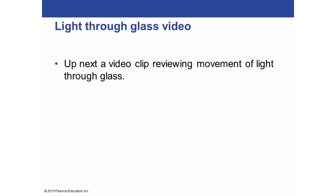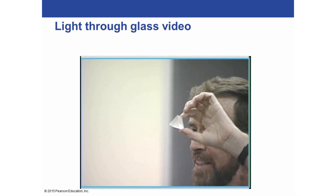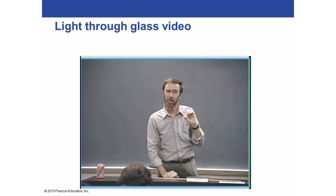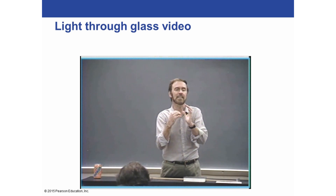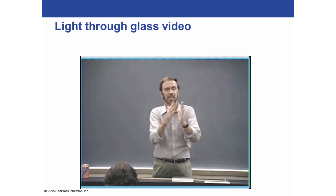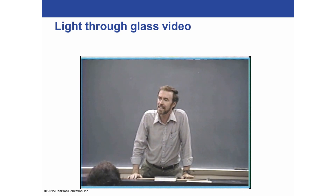Next we have a video clip by your textbook author that reviews the movement of light through glass. Did you know the speed of light is less in glass and water than it is in air? How does light slow down when it gets to the glass, and — this used to bother me — if it slows down in the glass, how does it speed up when it comes out the other side? How does light get through glass? Let me give you a little scenario of how that works.